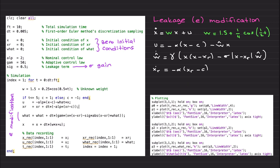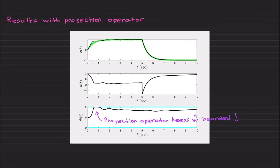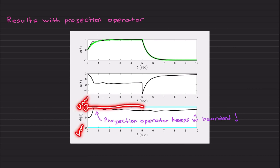Now let's discuss the results with the projection operator. In this slide and the following ones, green shows x_r — the reference model state capturing ideal closed-loop behavior — and x is the actual uncertain system state. Here is the control signal and w-hat. For the projection operator case, I chose w_max and w_min to be 2 and -2 (symmetric, though it doesn't have to be).